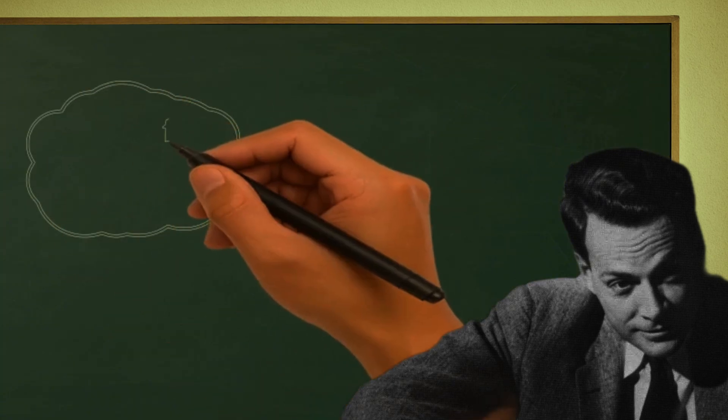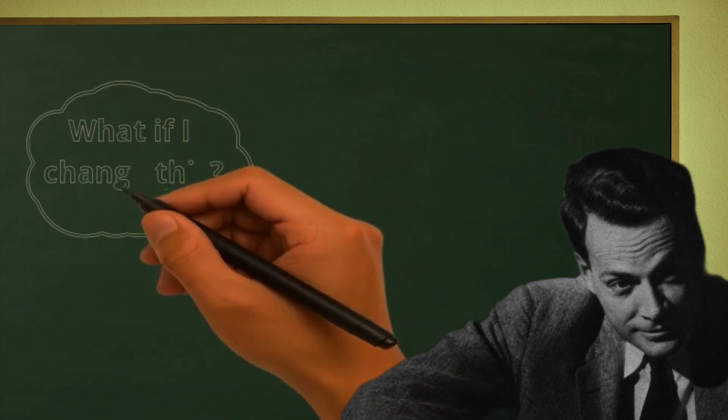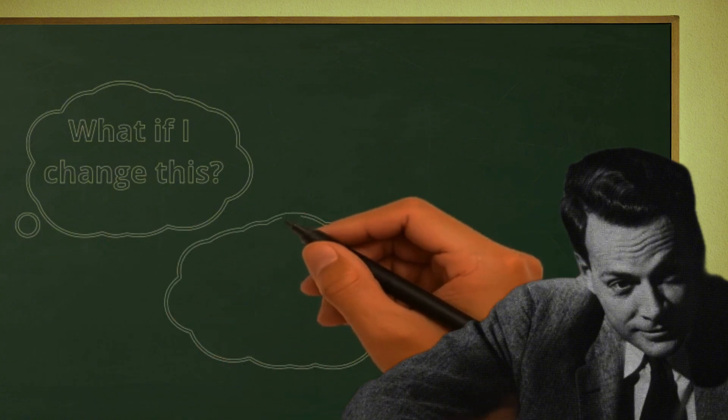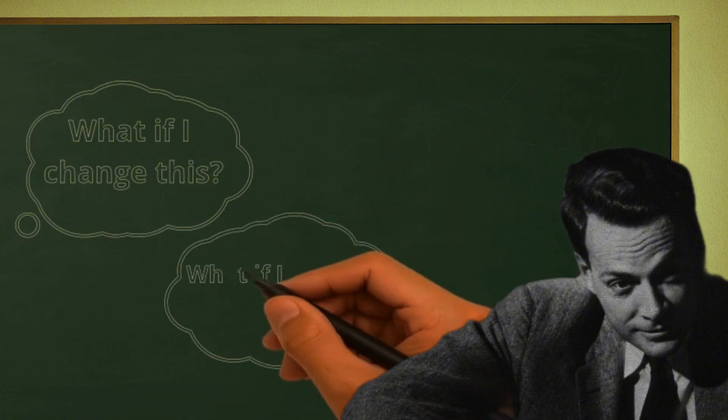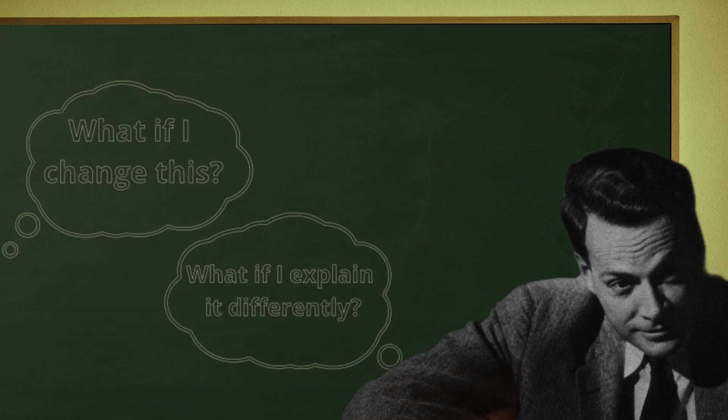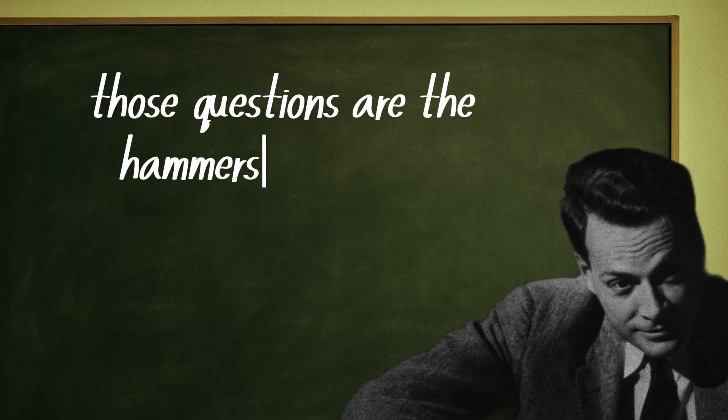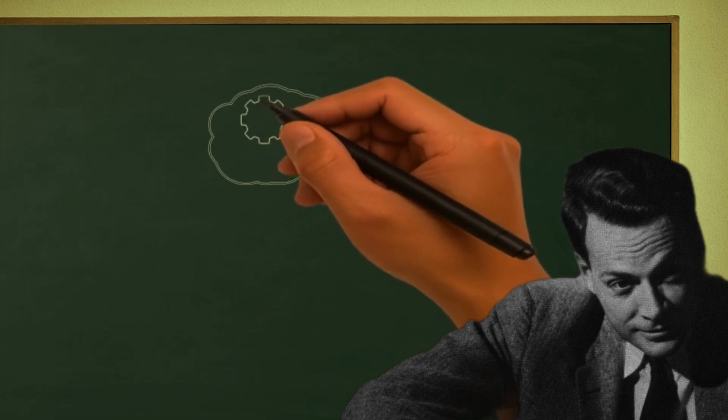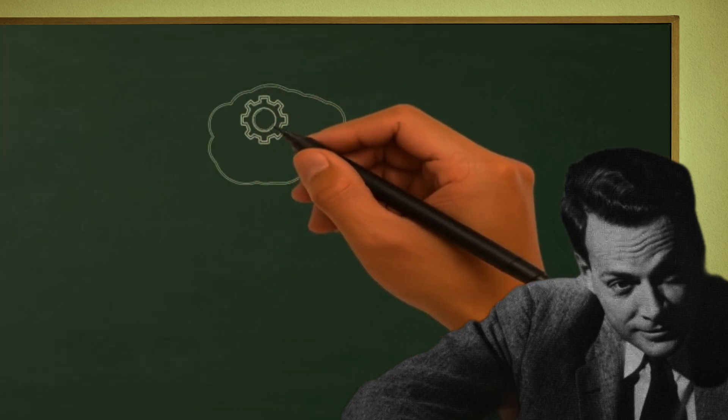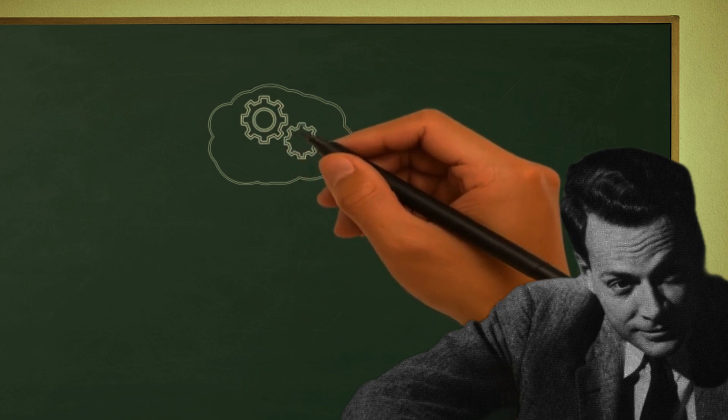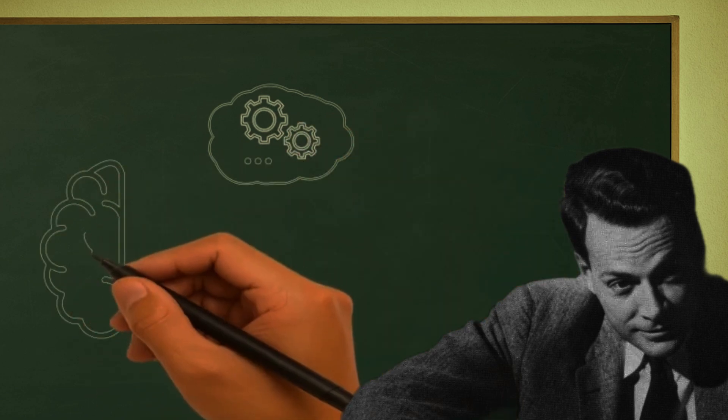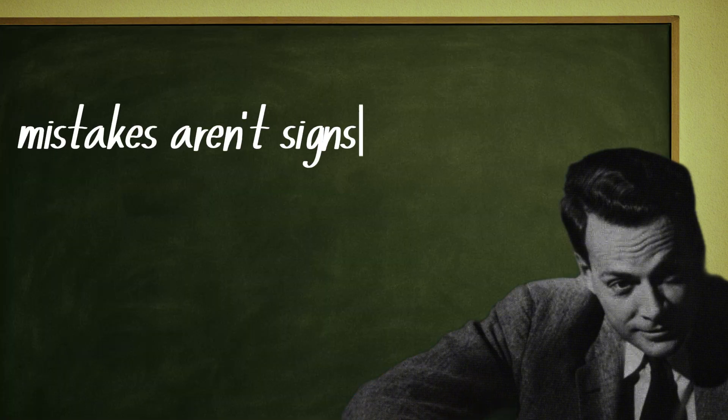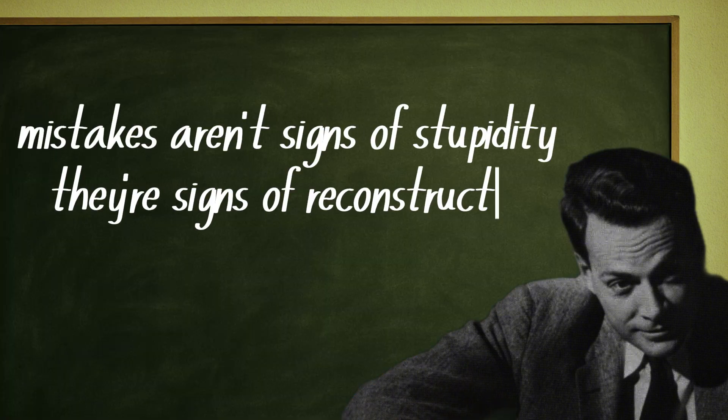The greatest thinkers do this constantly. They don't memorize formulas, they challenge themselves with questions. What if I change this? What if I explain it differently? What if I got it all wrong? Those questions are the hammers that forge understanding. You want to know if you've truly learned something? Try to explain it without looking. If you get stuck, perfect. That's your brain showing you where the foundation is weak. Mistakes aren't signs of stupidity, they're signs of reconstruction.